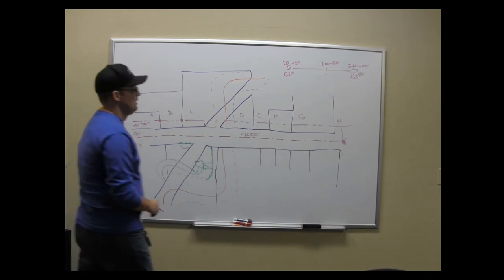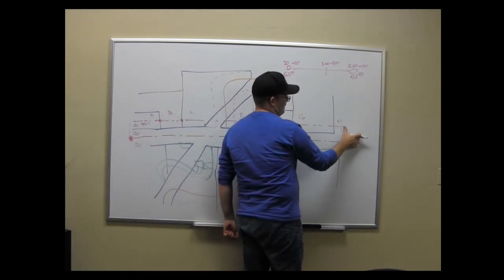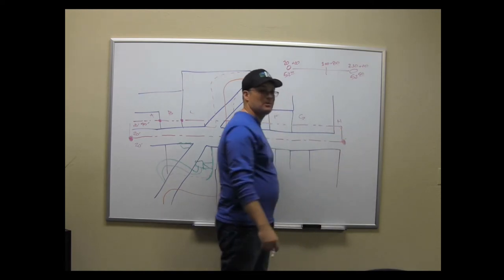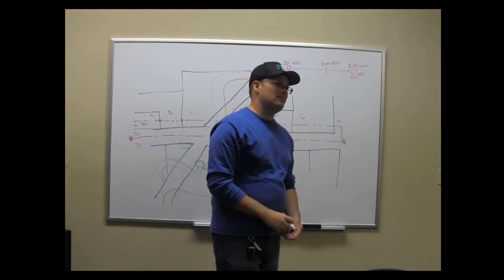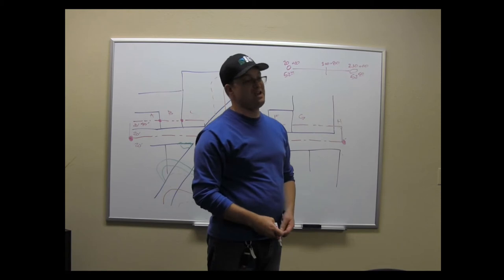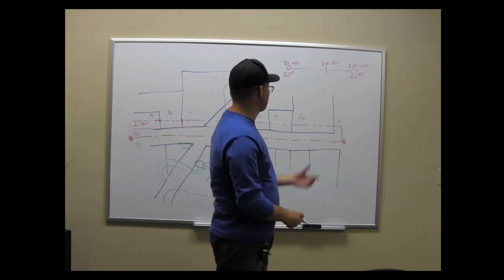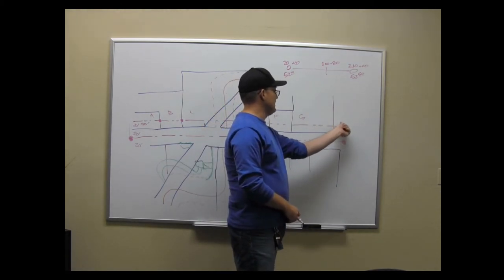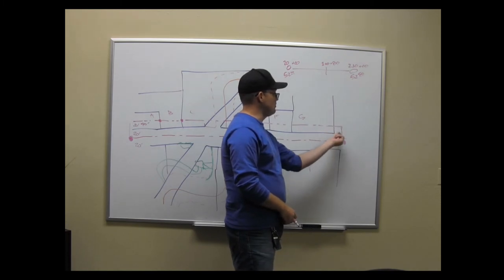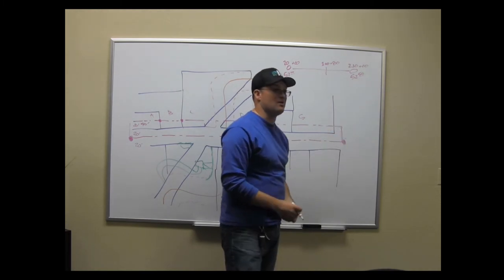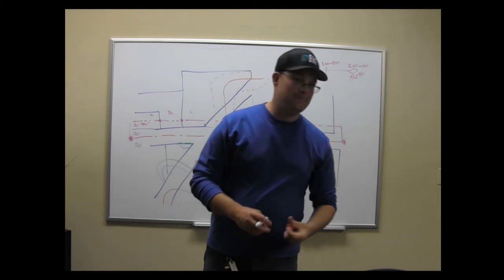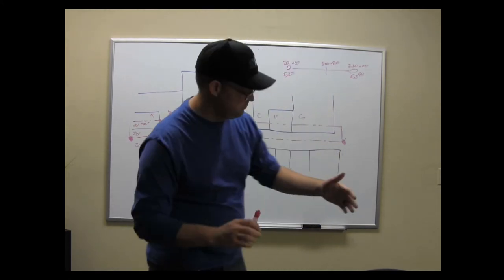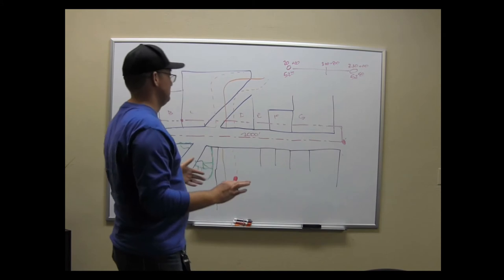On parcel H they'll even run the description out to centerline and overshoot the parcel, just to be safe. So if another surveyor comes in later and moves the line of G a little bit, you're still covered. That's how you do right-of-way surveys.